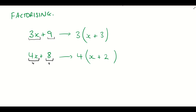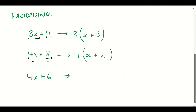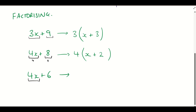Let's do one more, but this time with a different example — let's do 4x plus 6. What is the highest common factor amongst 4x and 6? The answer here is 2, because 2 goes into 4x and also goes into 6. So we take the highest common factor of 2, bring our 2 out the front. 2 times 2x gives us 4x, so that's correct. And how many times does 2 go into 6? 3 times. So our final answer is 2(2x + 3).